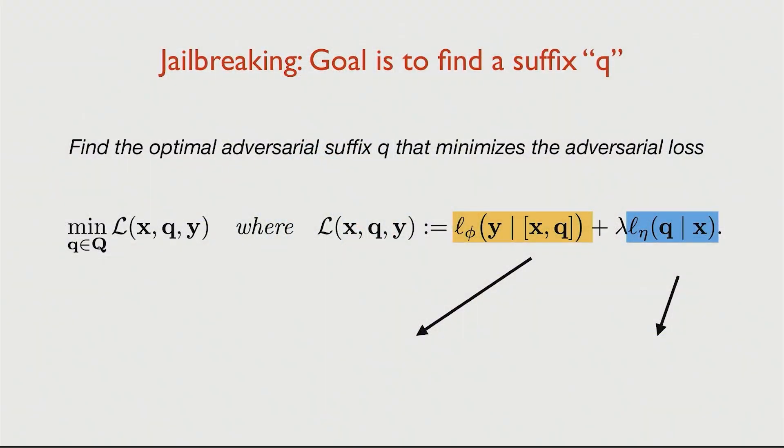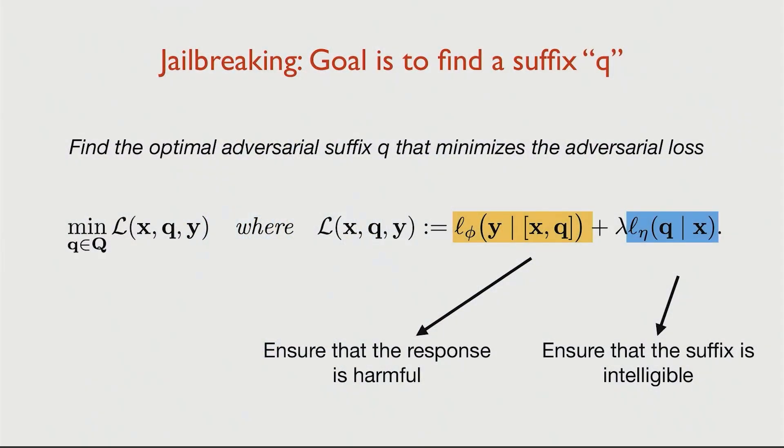For any jailbreaking, the main objective is to find a rewrite or a suffix Q. Given some input X, you want to find a Q that maximizes the probability of predicting a dangerous or unsafe response Y. The second part is that you want suffixes that are intelligible — you don't want random tokens. It's optional in the sense that you may just care about getting the unsafe response, but having intelligible suffixes allows you to transfer them across different language models.